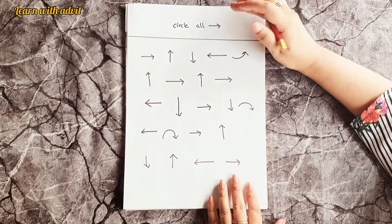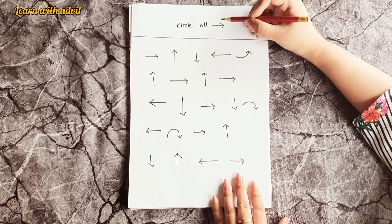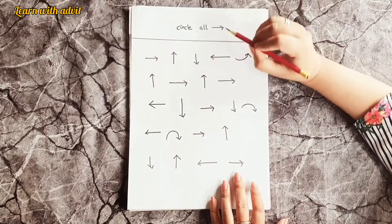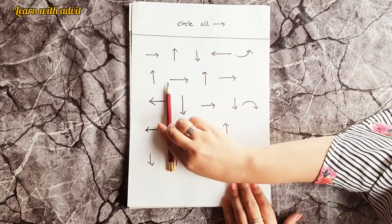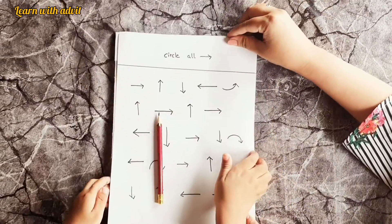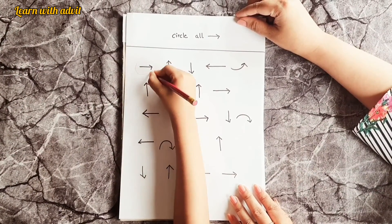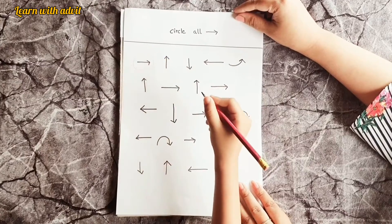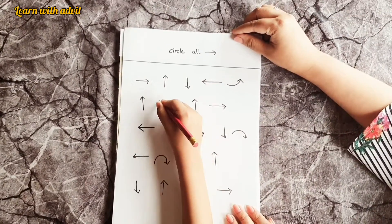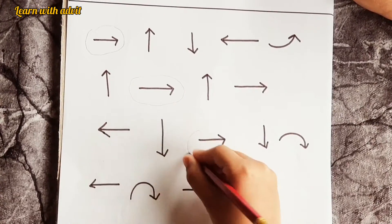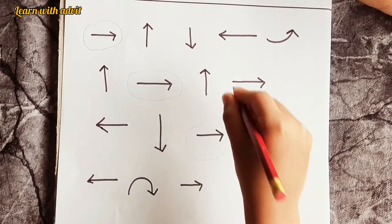In this sheet you have to circle all the - which arrow is this? My favorite direction, right arrow. Okay, so you have to circle all the right direction arrows. Come on, do it. So right arrows here, yes, right here, right here.